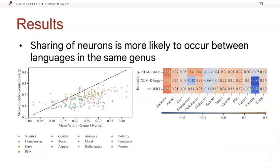Next, we find that sharing of neurons is more likely to occur between languages in the same genus.